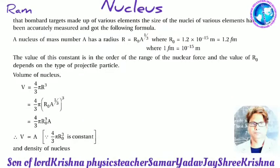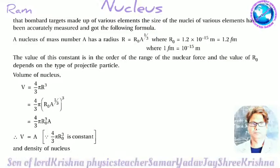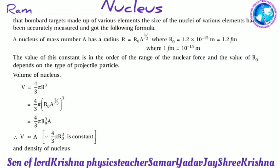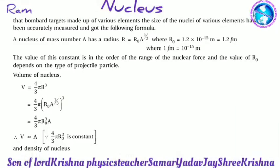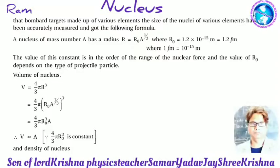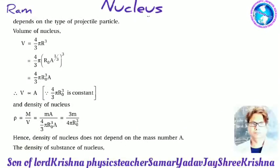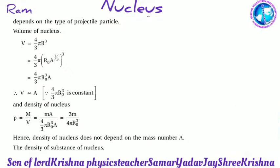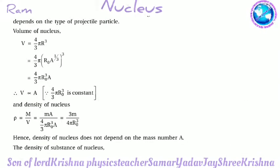The volume of the nucleus is V = (4/3)πR³ = (4/3)π(R₀A^(1/3))³ = (4/3)πR₀³ × A. Therefore V is proportional to A, since (4/3)πR₀³ is constant.